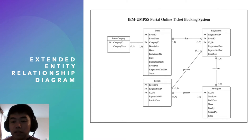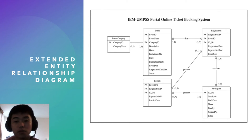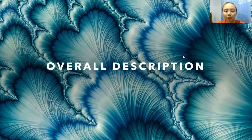From the participant table, there is one primary key, which is IC. From the receipt table, there is one primary key, which is receipt number, and two foreign keys, which are registration ID and IC number. That's all for me. Thank you.